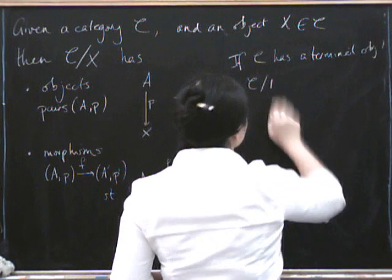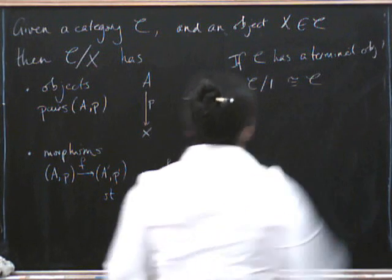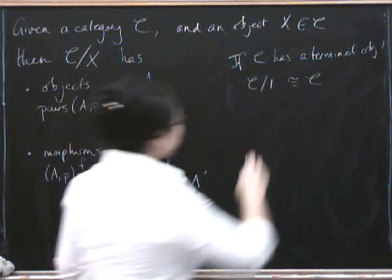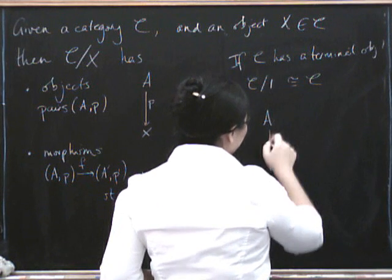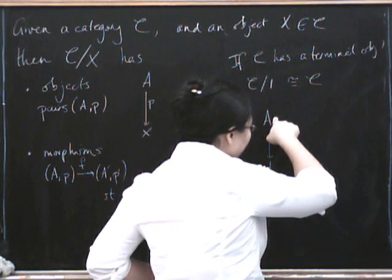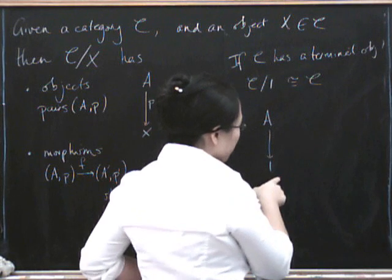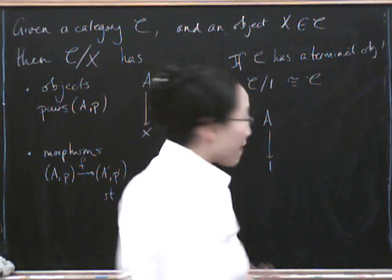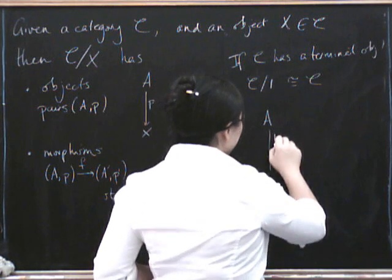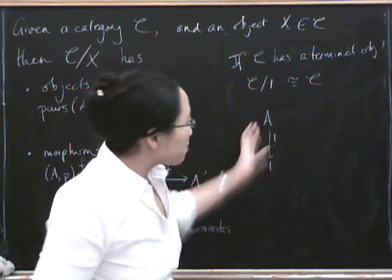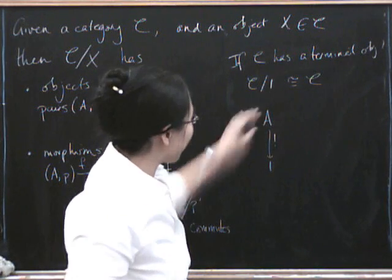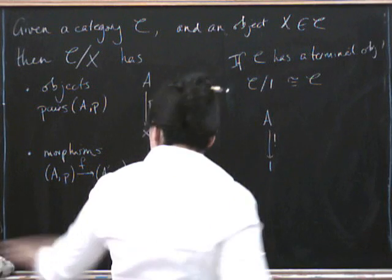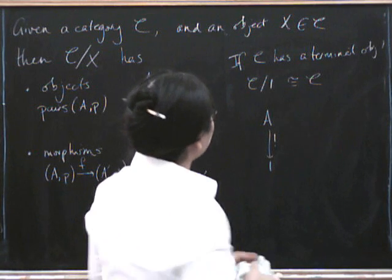So C sliced over the terminal object is just the same as C because the objects are going to be pairs, an object together with a morphism down to the terminal object. But there is only one morphism to the terminal object from any object. And so asking for a morphism down to the terminal object is no further information whatsoever from just having objects in the first place.